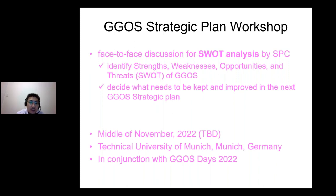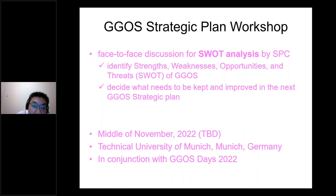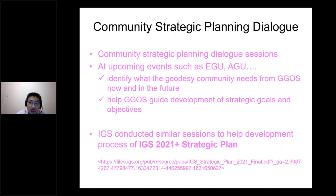We are planning to hold the workshop in the middle of November 2022 in conjunction with the GIGOS Symposium 2022 at the Technical University of Munich, Munich, Germany. The specific days are still not decided, but the basic plan is to have the workshop face-to-face in the middle of November next year. Community strategic planning dialogue sessions will also be very helpful, and we are planning to hold these sessions at upcoming events such as EGU and AGU.